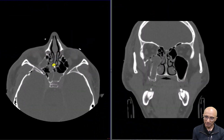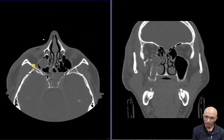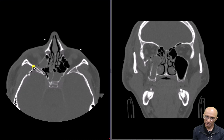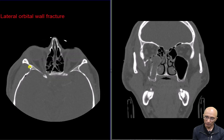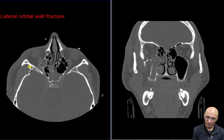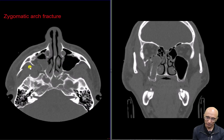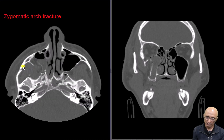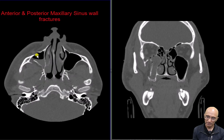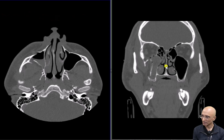On the axial images, we can see a fracture through the lateral wall of the orbit. As I scroll down further, we can also see a comminuted fracture of the zygomatic arch. There are fractures involving the anterior and posterior wall of the maxillary sinus with hemosinus.